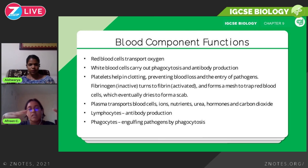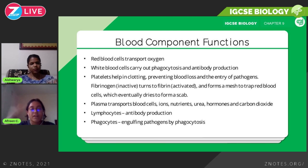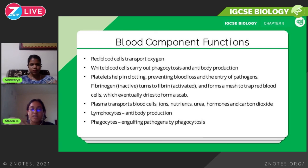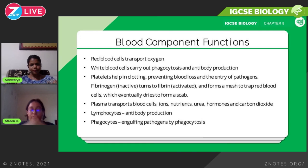Lymphocytes are white blood cells used in antibody production. Phagocytes are also white blood cells, used for engulfing pathogens by phagocytosis. These processes will be explored in more detail in the next chapter.